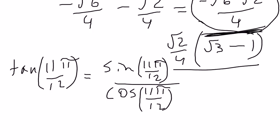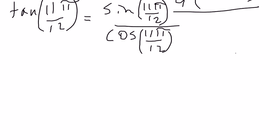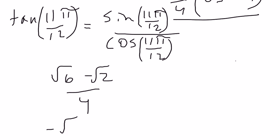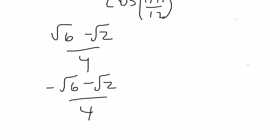We just found sine to be square root of 6 minus the square root of 2 all over 4, and we just found cosine to be negative square root of 6 minus the square root of 2, all over 4.